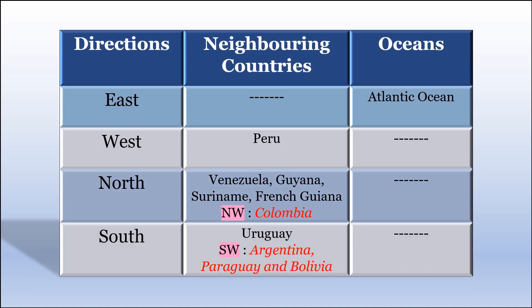This is the table given in your textbook on page number 11, wherein they have given the directions and we need to fill in the neighboring countries and the oceans. To the east of Brazil, we have the Atlantic Ocean. To the west, we have Peru. To the north, we have Venezuela, Guyana, Suriname and French Guiana. To the northwest, we have Colombia. To the south, we have Uruguay. And to the southwest, we have Argentina, Paraguay and Bolivia.